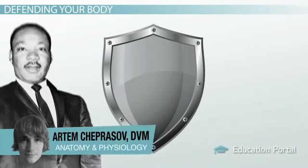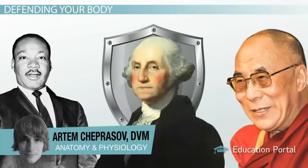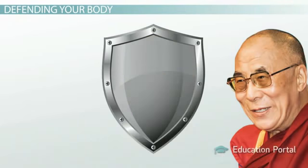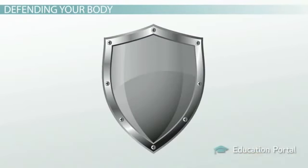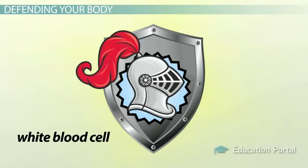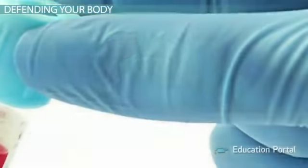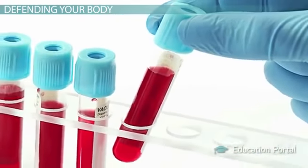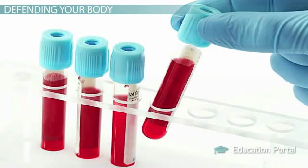The defenders of freedom, the defenders of the helpless — they are not Martin Luther King, George Washington, or the Dalai Lama. They are the white blood cells in your body. They are your knights in shining armor. Without them you would be helpless and you wouldn't be free to do much of anything but live in a protective bubble.